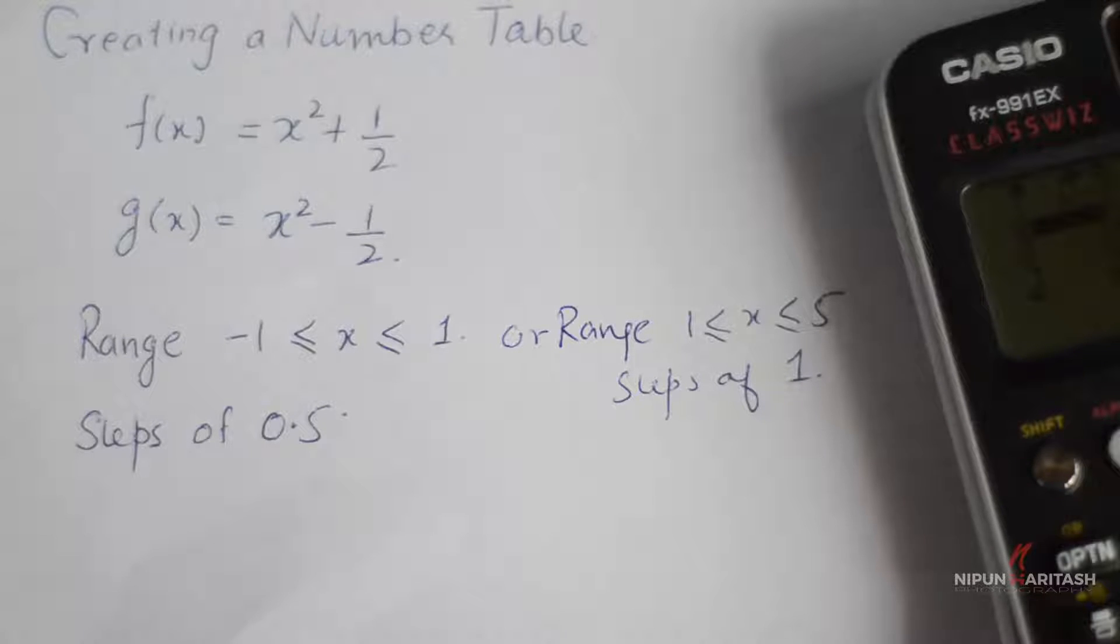Now this calculator is, as we already discussed, a lot better than the Casio FX991EX in which we did not have this function. So let us say we have two equations: f(x) represented by x² + 1/2 and g(x) is represented by x² - 1/2.